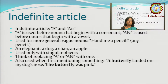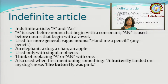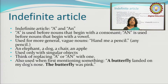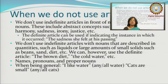It is also important to know when to use 'a' and when to use 'an,' because at some point most of us get confused. We should also use them when first mentioning something, like: 'A butterfly landed on my dog's nose; the butterfly was pink.' This sentence has both 'a' and 'the,' and we have to be careful where to use each.